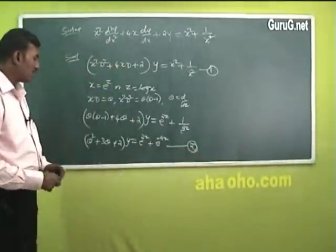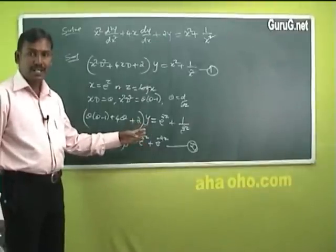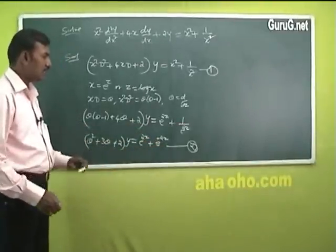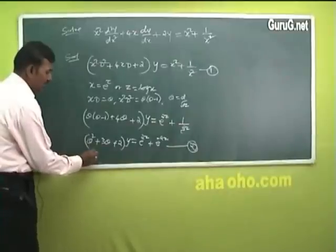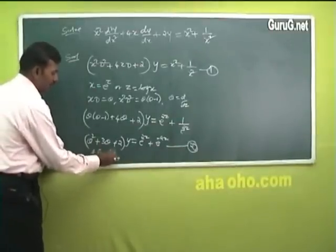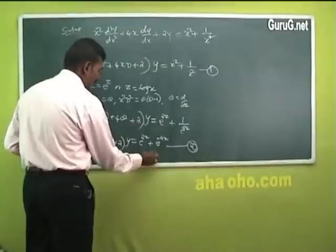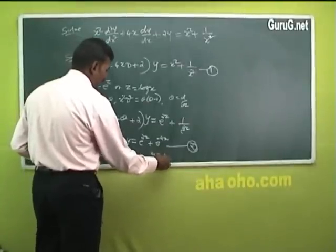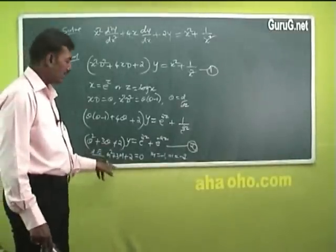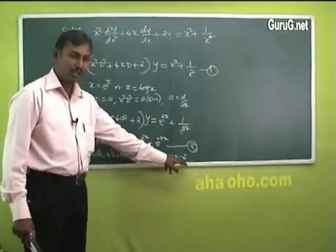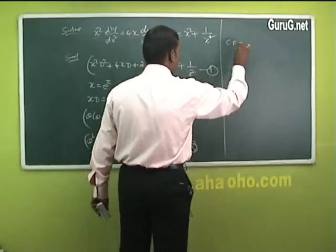This equation is a linear differential equation with constant coefficients — a standard type — with independent variable z. The auxiliary equation is m² + 3m + 2 = 0, giving roots m = -1 and m = -2.